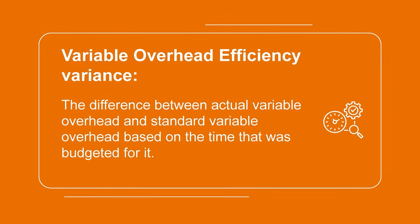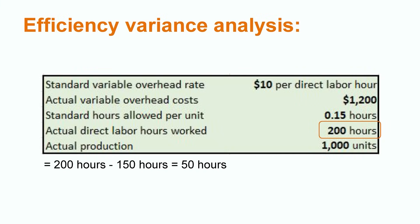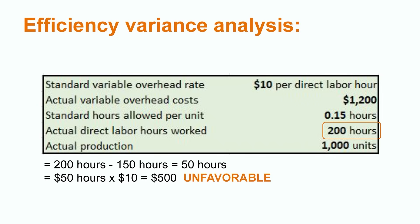Next, we calculate the variable overhead efficiency variance, which is the difference between actual variable overhead and standard variable overhead based on the time that was budgeted. The calculation is: actual hours minus standard hours, multiplied by the standard variable overhead rate. Taking the difference between the actual hours of 200 and the standard hours of 150, we get 50 hours. We then multiply the 50 hours by the standard variable overhead rate of $10, giving us a result of $500. Since the company planned to take 150 hours and actually took 200 hours to complete the work, this would be a $500 unfavorable variance when it comes to efficiency, meaning they likely did not manage their labor as well as they would have liked.